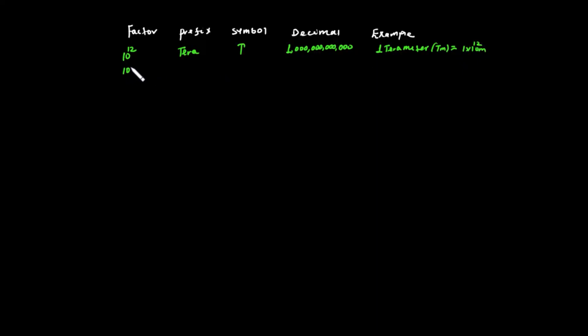10 to the power of 9 is Giga. Giga is written with the symbol G. So 1 gigameter is equal to 1 times 10 to the power of 9 meters.